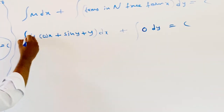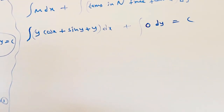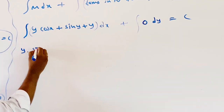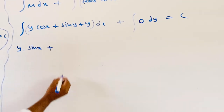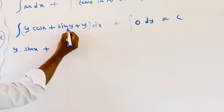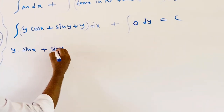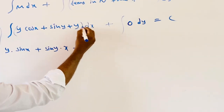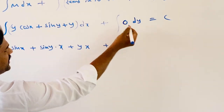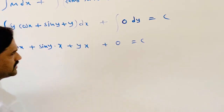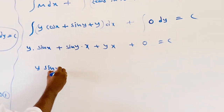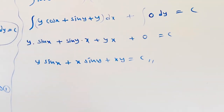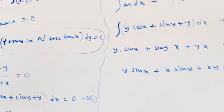Integrating M with respect to x, with y as constant: integral of y cos x is y sin x; integral of sin y dx (y constant, no x term) is sin y times x; integral of y dx is y times x. The integral of 0 dy is 0. Therefore the final general solution is: y sin x plus x sin y plus xy equals c.